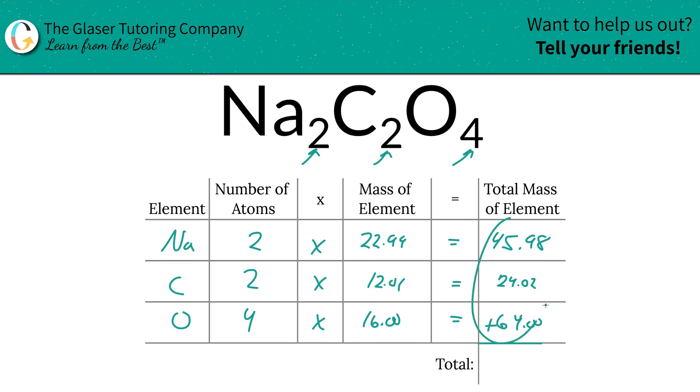Then you're going to add this column together to find the total mass of the entire compound, and that's going to be 134.00. There you have it. That's the total mass of the compound. That's the first step.